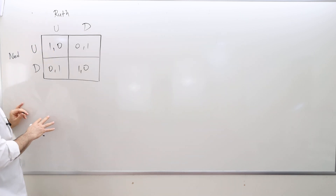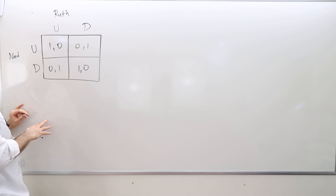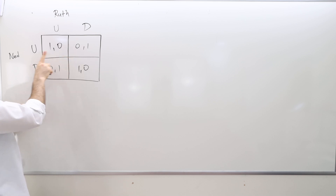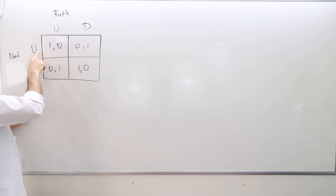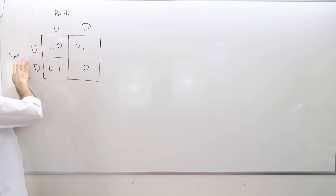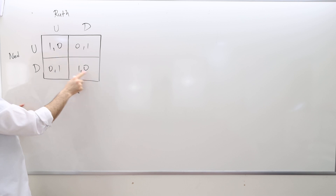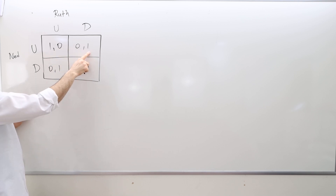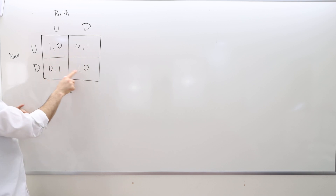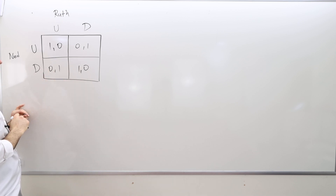Finding Nash equilibrium in pure strategies — first off, is there any dominant strategy for any player? U is sometimes better than D, but sometimes worse. So for Ned, there's no dominant strategy. And same for Ruth — sometimes D is better, sometimes U is better. Therefore, there is no dominant strategy for either player.